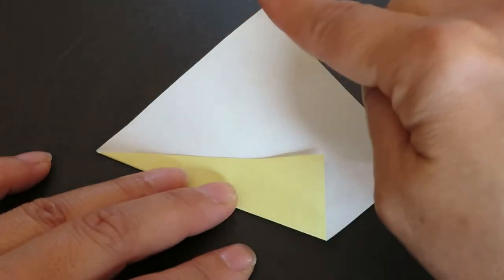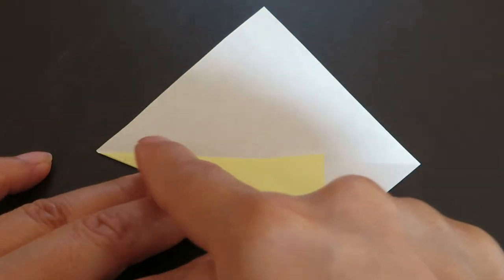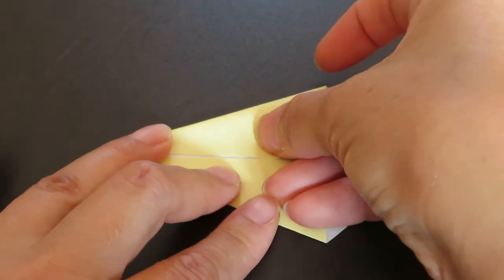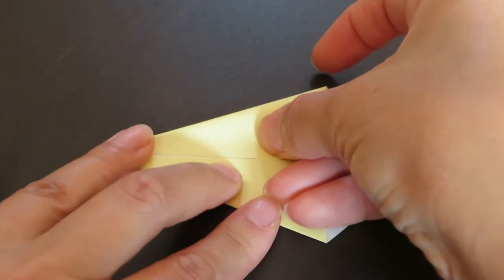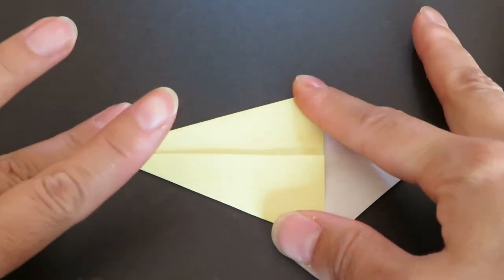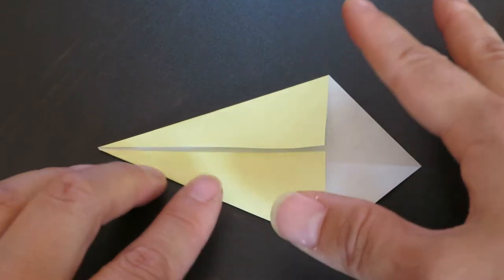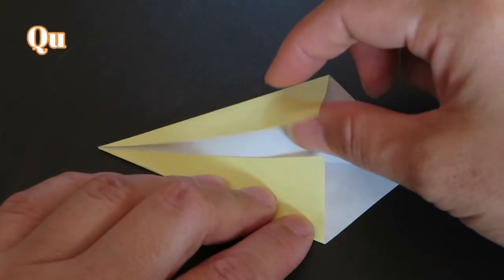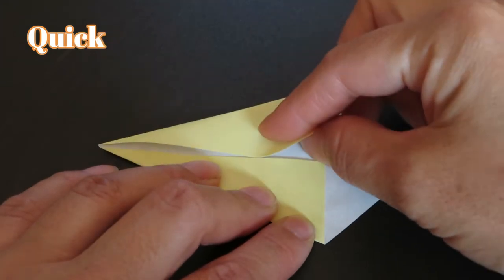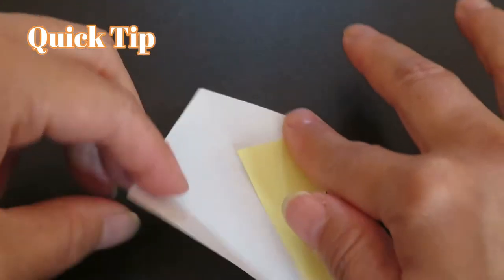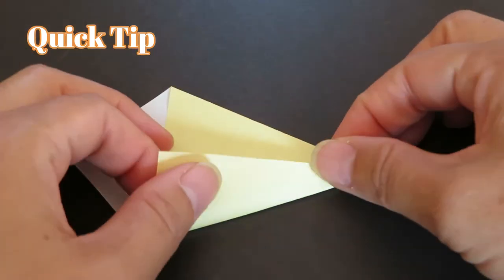And same way, match this side line with the center line by folding down. If it's difficult for you to fold down, you can also rotate the paper and fold it up.